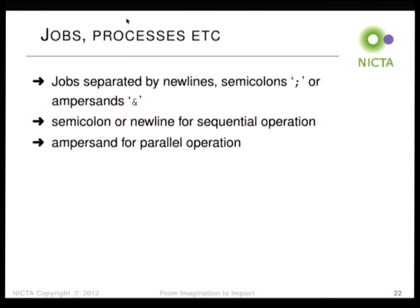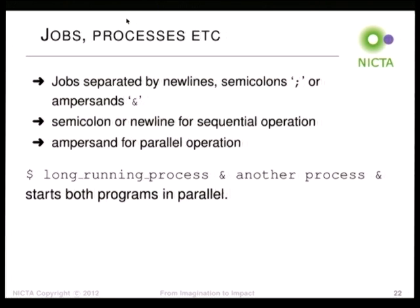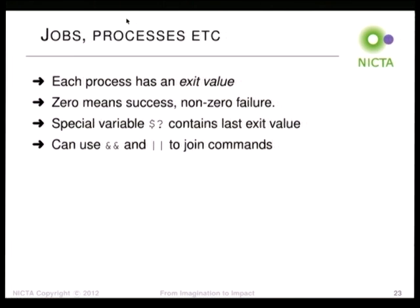Jobs are things that the shell treats as a separate process group. You separate jobs by newlines, ampersands, or semicolons. Semicolons and newlines mean sequential operation — do A then B. Ampersands say do everything in parallel. So if you do 'some-long-job & some-other-long-job &' it starts both of them. Each process has an exit value and a process ID.